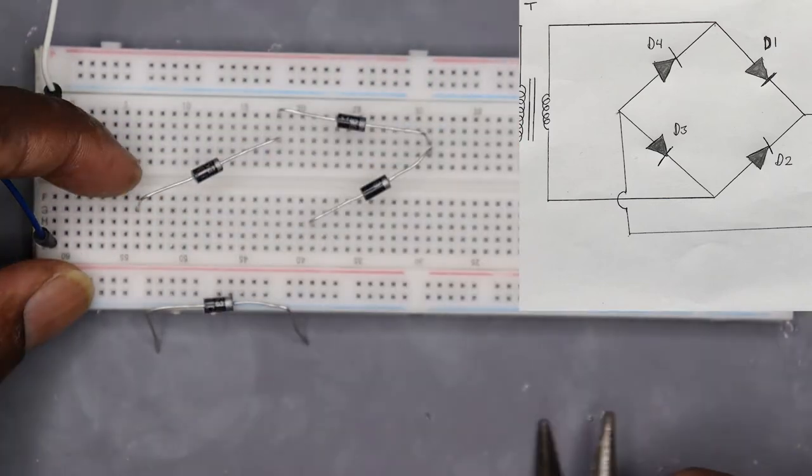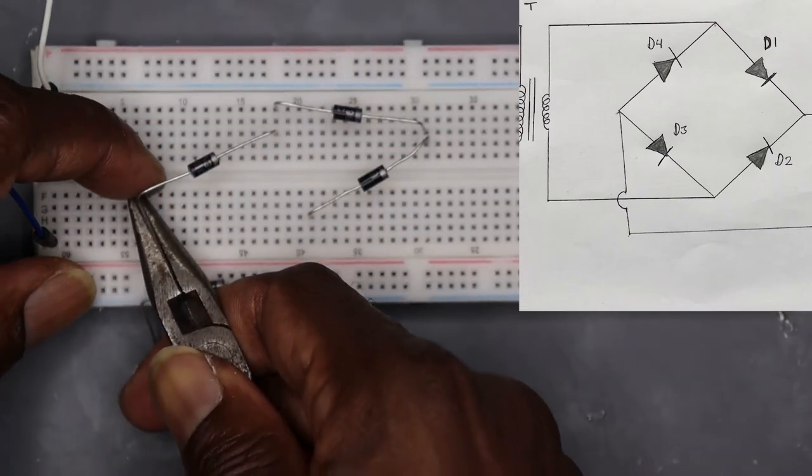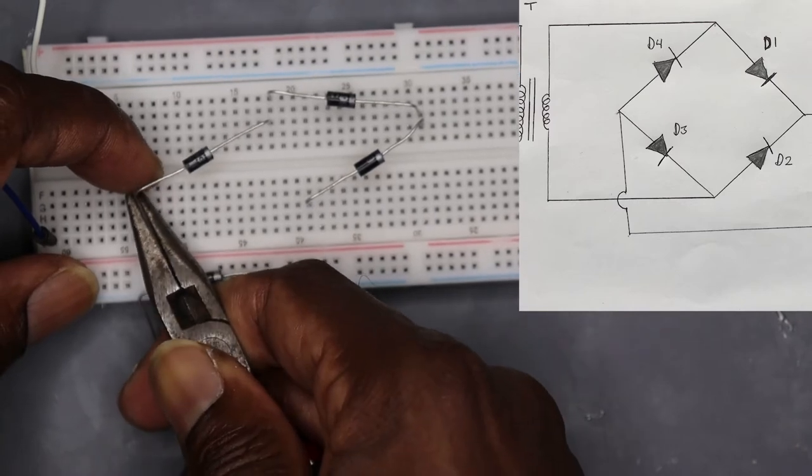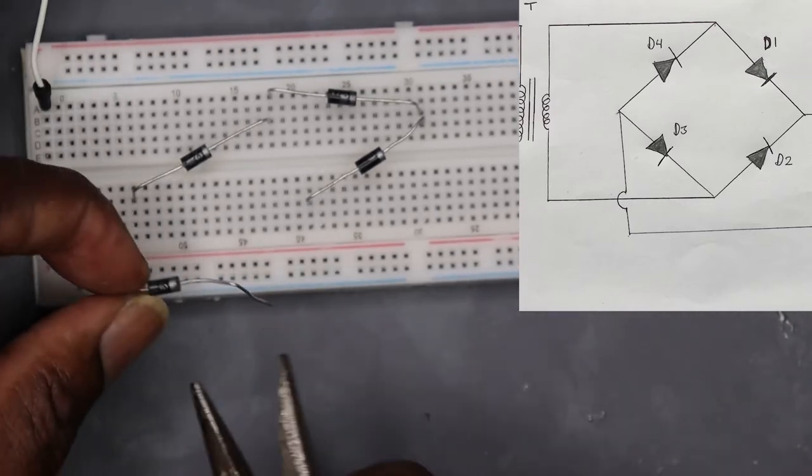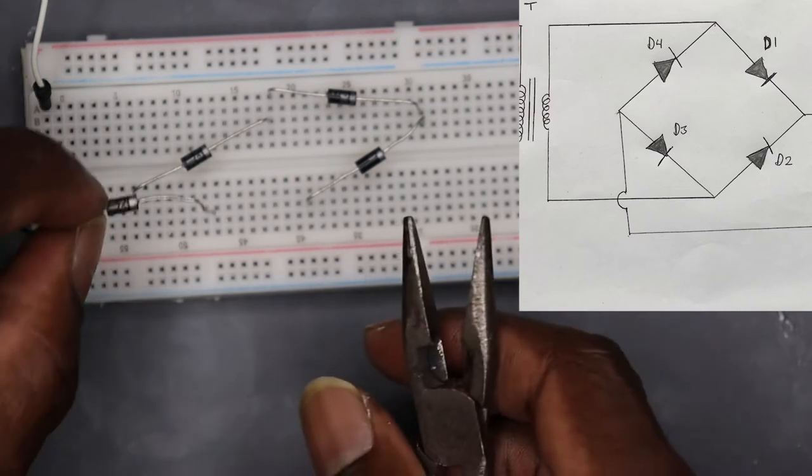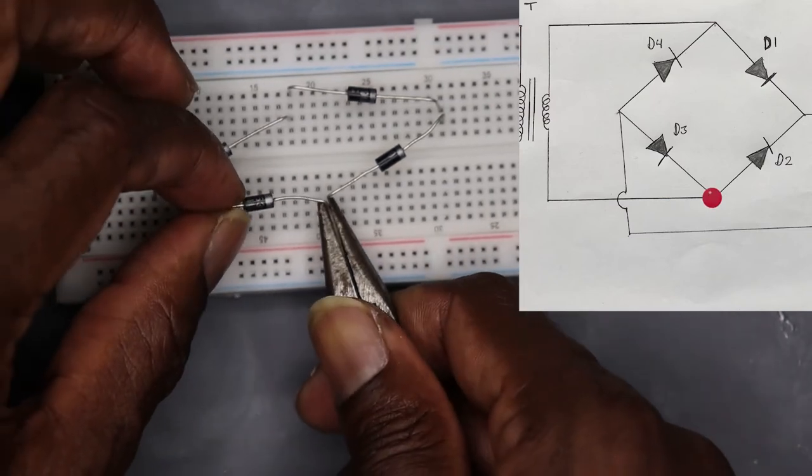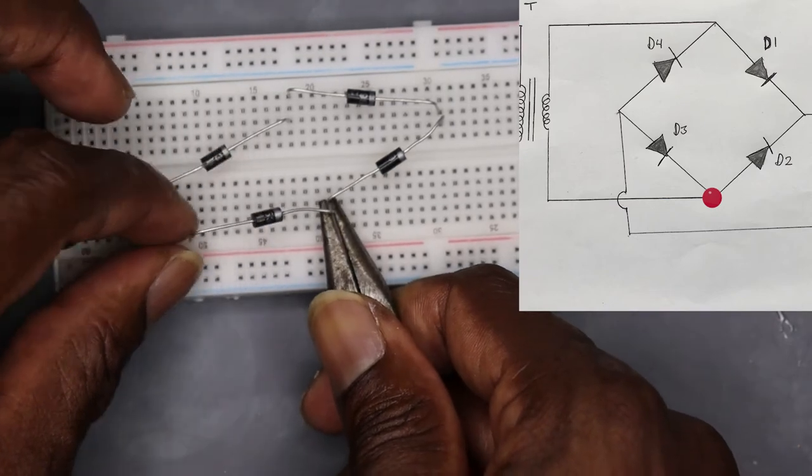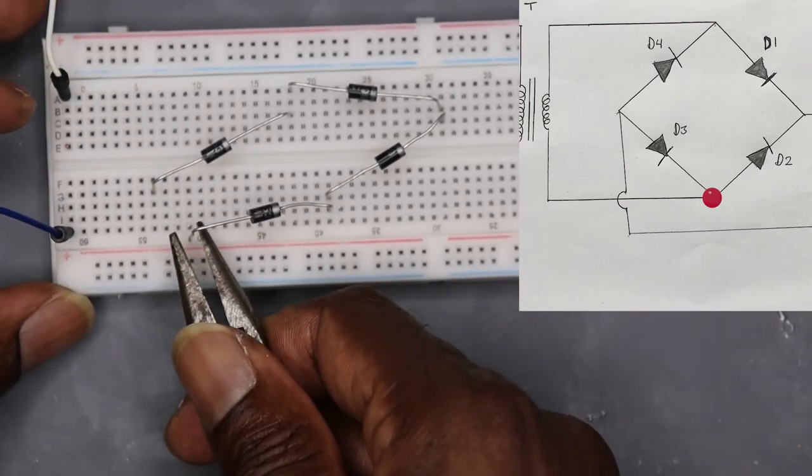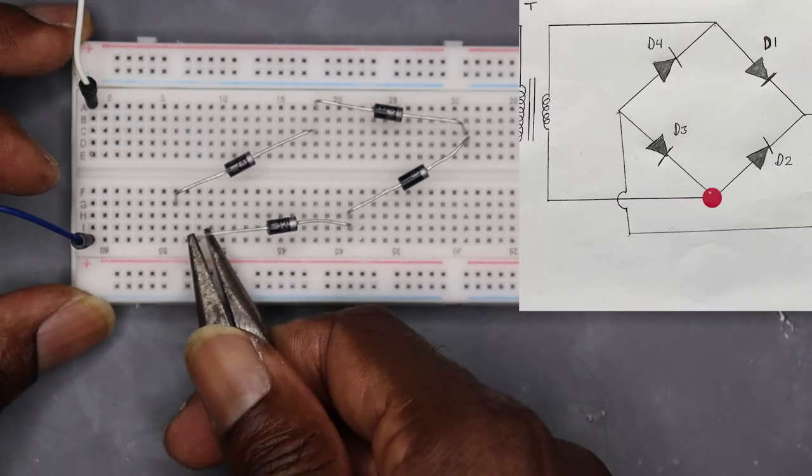Now for the last diode I'm going to ensure I make a cathode-anode connection right there, and then an anode-anode connection at this point.